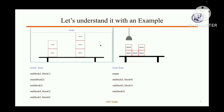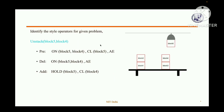The goal state uses the same parameters: 'empty' indicates the robotic arm has nothing in it. In the goal state, block three is on block four, block five is on block one, and block two is on the table. We need to work from the initial state and reach this goal state.